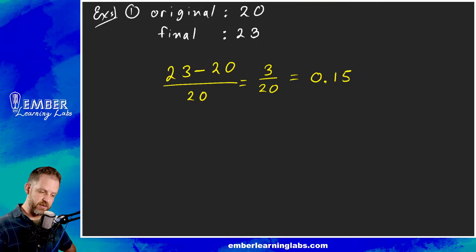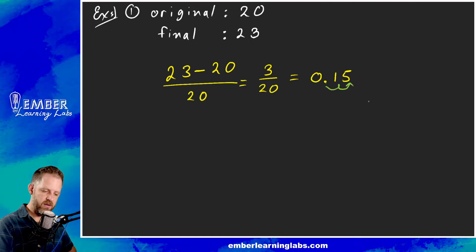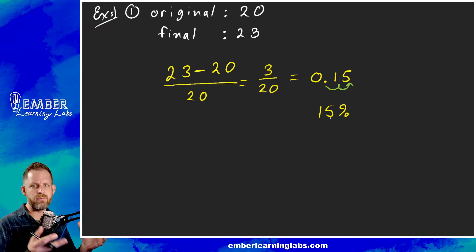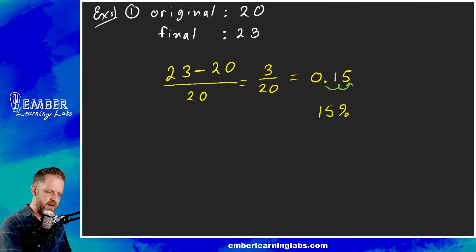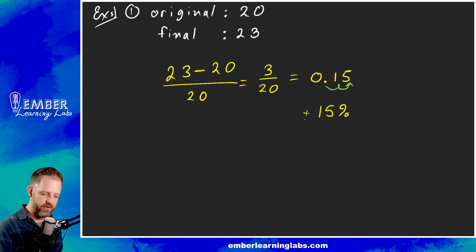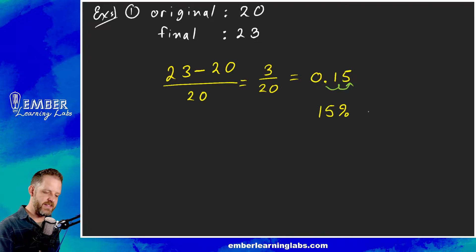Now to convert that decimal into a percent, we move the decimal twice, and we end up with 15 percent. The last thing we need to figure out is whether this was a 15 percent increase or decrease. We started at 20 and went to 23, so clearly that's an increase. Our answer ended up positive — if we end up with a positive percent change, it's an increase. So the answer is a 15 percent increase.